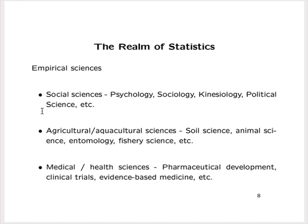In some ways the problems each field deals with are unique, though there are many commonalities. Because of those uniquenesses, some statistical methodologies tend to appear only in certain fields. For example, structural equation modeling or path analysis is very prevalent in the social sciences but you would almost never see it in the agricultural sciences. On the other hand, mixed modeling or certain kinds of experimental designs tend to appear in the agricultural sciences but perhaps not in the medical sciences.